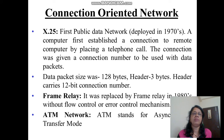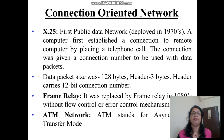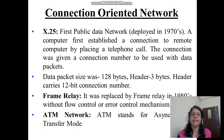After X.25, it was replaced by Frame Relay in the 1980s, which had no flow control or error control mechanism. In a connection-oriented network, packets travel maintaining exact order on the sender side, and that exact order is maintained at the receiver side as well.